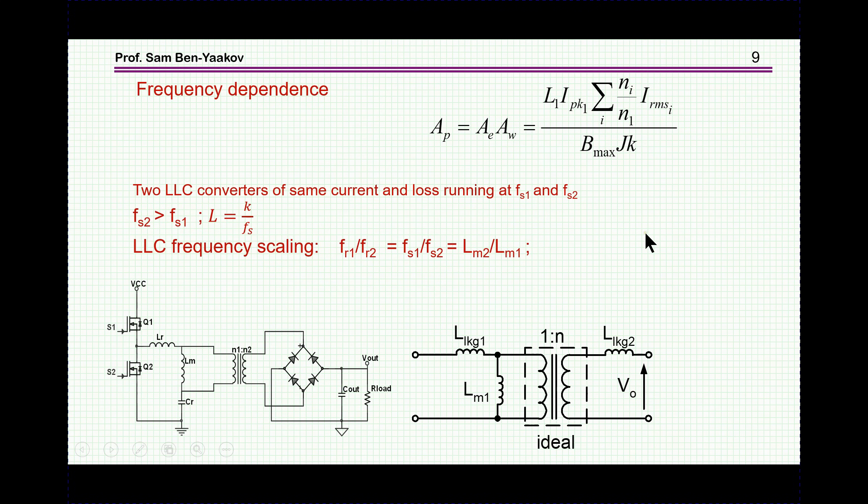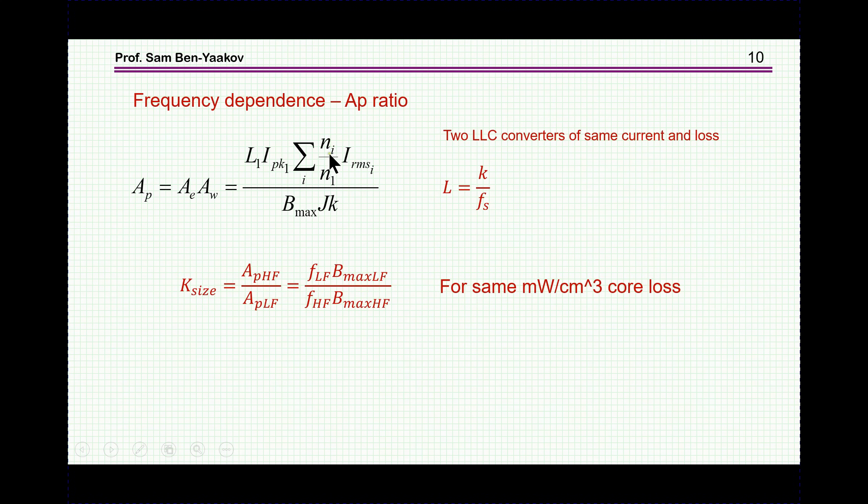We have then B_max frequency dependent and then we have also the inductance, it's frequency dependent, because as we increase the frequency, the required inductance will be proportional lower, because the inductance will be like 1 over the switching frequency. So as we go to a higher frequency, the inductance, the required inductance, both for L_M and L_R, is going to be lower. On the basis of these two, and assuming that I_P and J and K are going to be the same, I'm going to discuss it a little bit later, but let's now assume that these are the same.